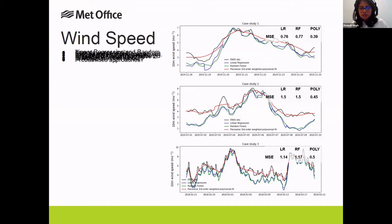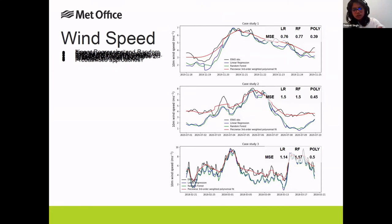The under-prediction at low wind speeds is something that needs to be looked at in more detail. The weight associated with the mean wind speeds given as input should be higher. In general, looking at mean squared error, it seems to be very low for the polynomial fit, but if you're interested in the ramp-up and ramp-down of the winds, machine learning models are probably more relevant.